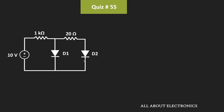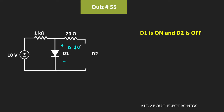Let's consider the second case where diode D1 is ON while D2 is OFF. When D2 is in the OFF condition, no current flows through it. Since D1 is ON, the voltage drop across D1 will be 0.7V, and the same voltage will also appear across D2. Since D2 turns ON whenever the voltage across it exceeds 0.3V, and VD2 is 0.7V here, D2 should conduct. So this condition is also not true.